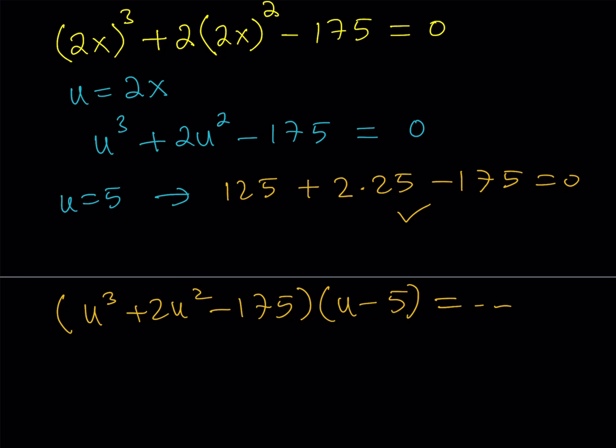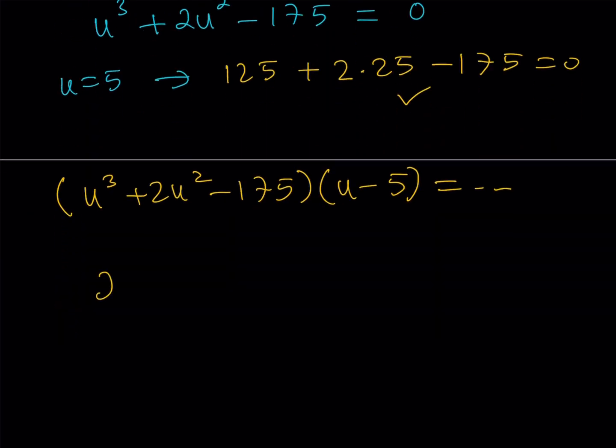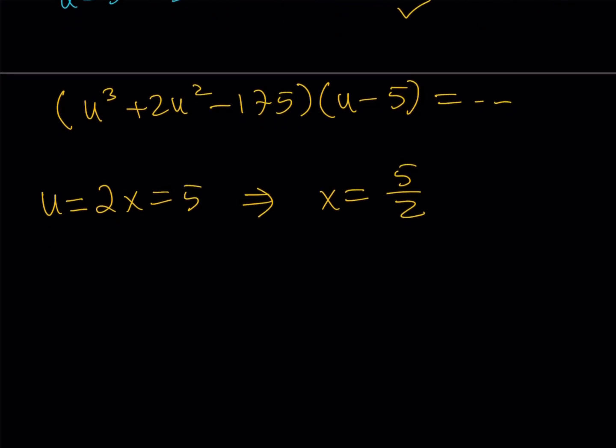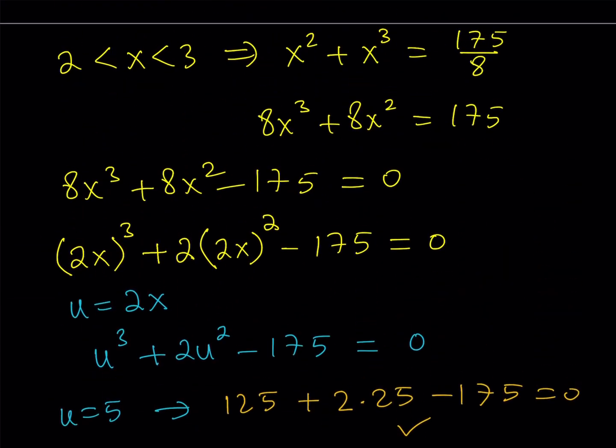So now u equals 5 is a valid solution, but u is a dummy variable. So 2x equals 5, because u equals 2x, remember? So from here, we basically get the only solution. Why did I say the only solution? I should be checking the other ones as well, right? Well, let's go ahead and write it down first. x equals 5 halves. Okay, so this is a valid solution. What happens if x is in a different interval?